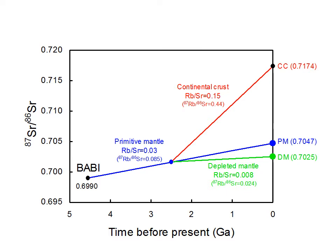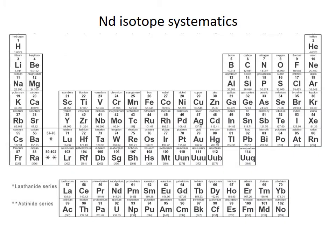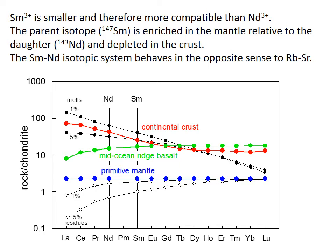The neodymium isotope system works in a very similar way. ¹⁴⁷Sm decays to ¹⁴³Nd via alpha decay. It works slightly differently: when you melt the mantle, samarium is slightly more compatible than neodymium, so neodymium is enriched in the continental crust and what's left behind — the residual mantle — is depleted in neodymium but has relatively more samarium. So we've now depleted the mantle in neodymium.